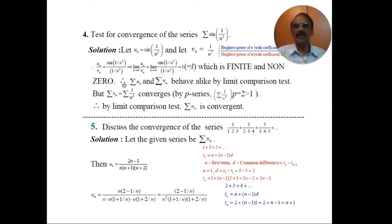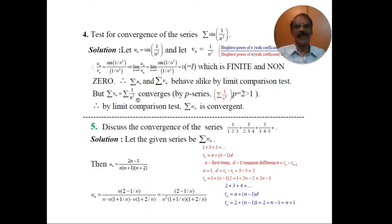The limit is 1, which is finite and non-zero. Therefore, by the limit comparison test, series un and series vn behave alike. Series vn is series 1 by n squared, which is the auxiliary p-series 1 by n^p with p equal to 2. Since p equals 2 and 2 is greater than 1, series vn is convergent. Therefore, by the limit comparison test, series un is convergent.